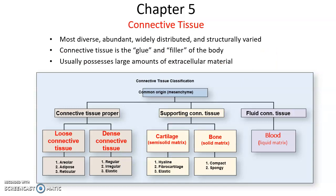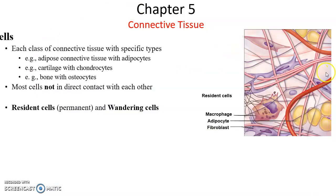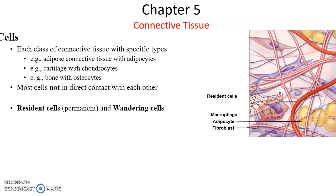Connective tissue is the most diverse, most abundant kind of tissue — extremely varied from loose connective tissue, dense connective tissue, cartilage, bone, and even blood. Cells found in connective tissue are specific to that tissue: adipocytes in adipose tissue, chondrocytes in cartilage, osteocytes in bone. The cells are rarely in contact with each other — usually there's lots and lots of extracellular material, lots of extracellular matrix. These cells can be resident cells that permanently stay there, or wandering cells that come and go.